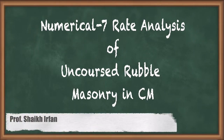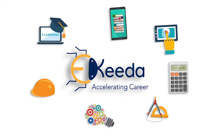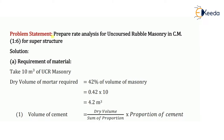Hello everyone. In this video we are going to see a numerical on rate analysis for uncoursed rubble masonry in cement mortar for superstructure. So let's see first the problem statement. It says prepare rate analysis for uncoursed rubble masonry. The type of masonry given here is uncoursed rubble masonry in cement mortar and the proportion given is 1:6 for superstructure. So let's solve this numerical.